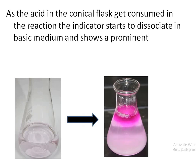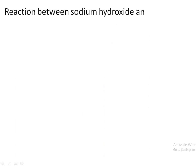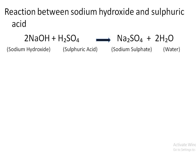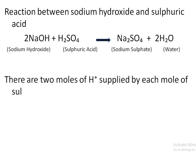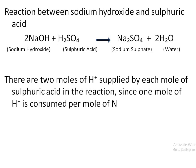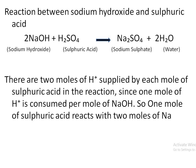The colorless to pink color change marks the end point of the titration between sodium hydroxide and sulfuric acid. In the reaction, sodium hydroxide reacts with sulfuric acid to form sodium sulfate and water. There are 2 moles of H⁺ ions supplied by each mole of sulfuric acid, and since 1 mole of H⁺ is consumed per mole of NaOH, 1 mole of sulfuric acid reacts with 2 moles of NaOH.